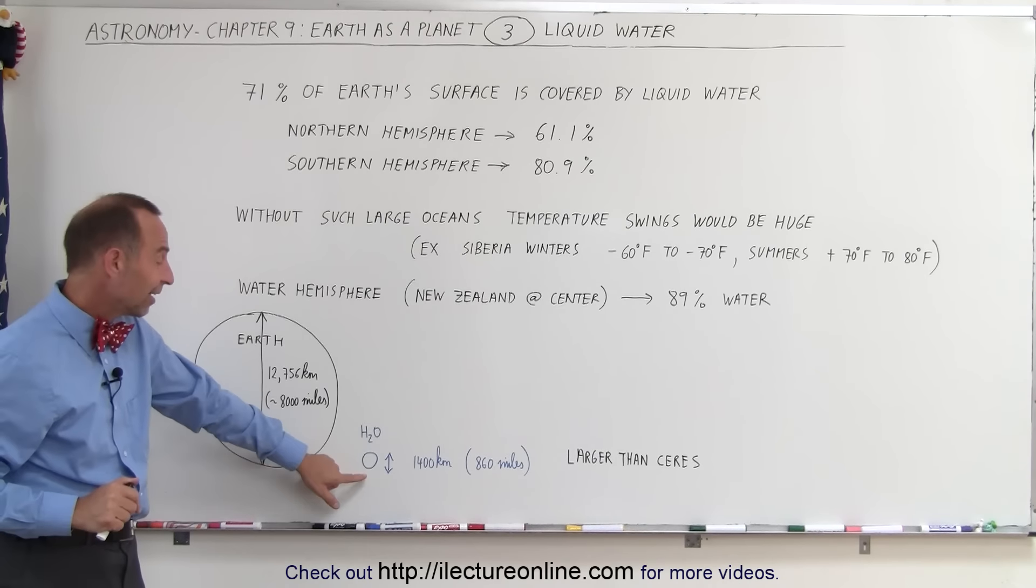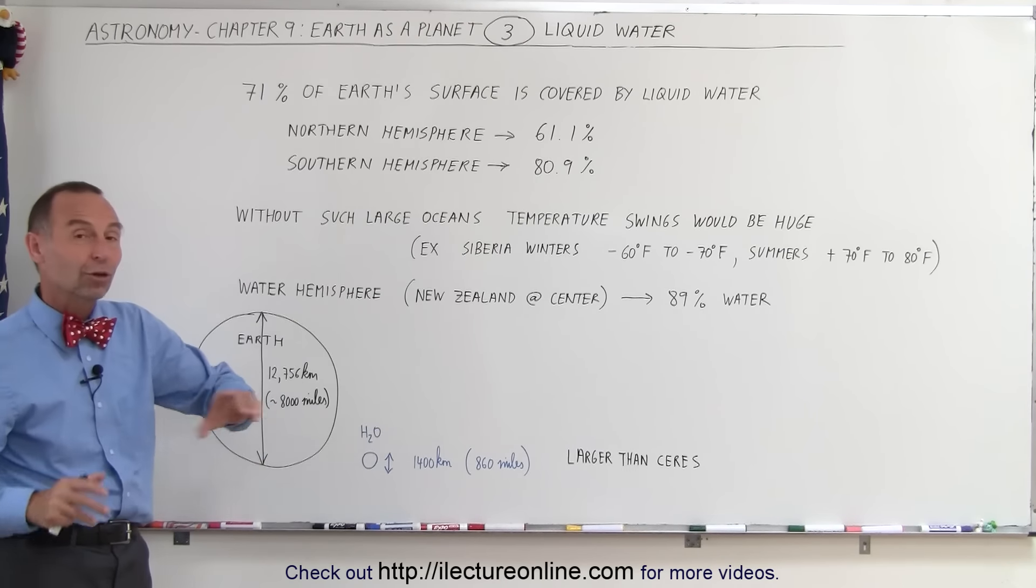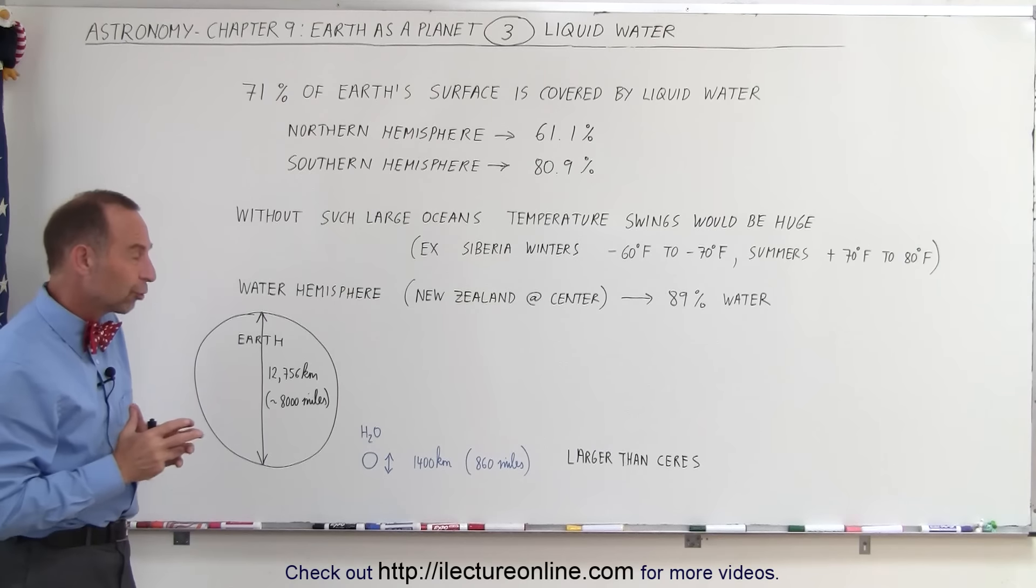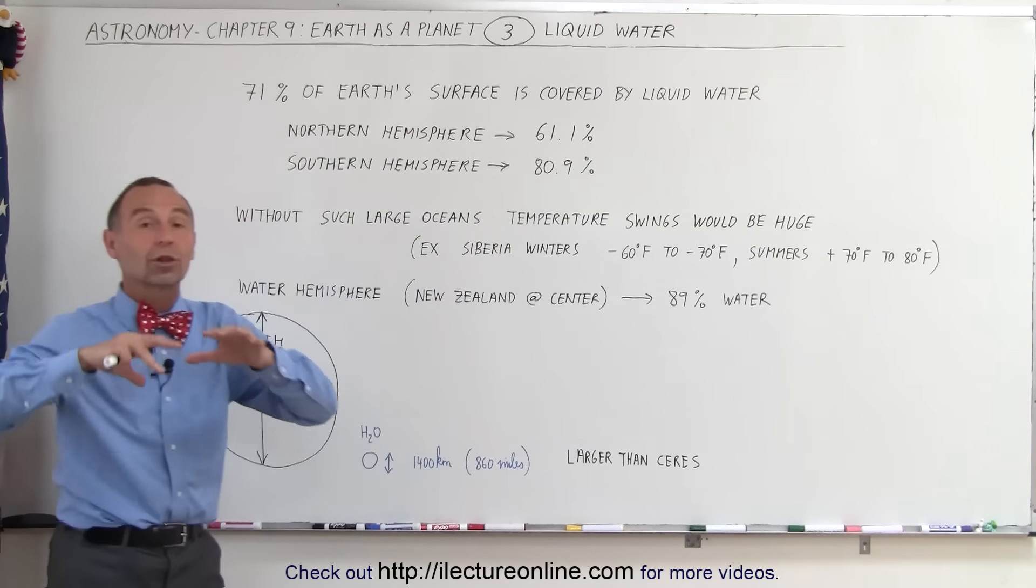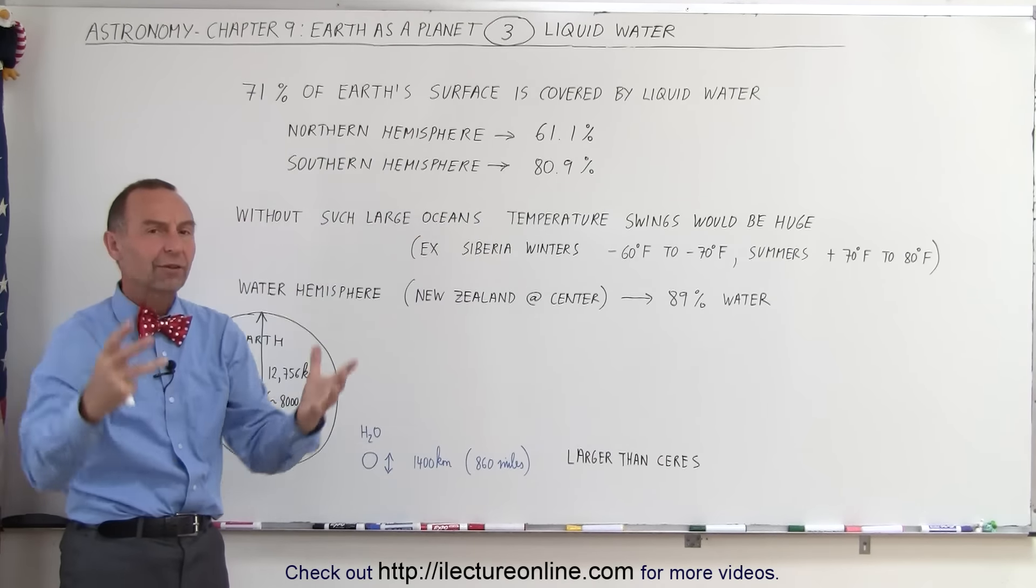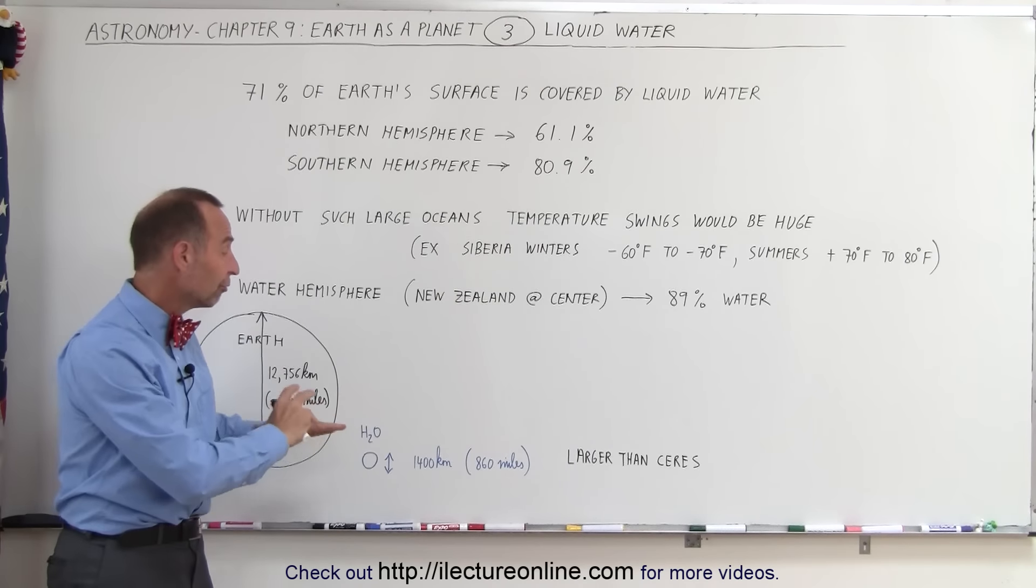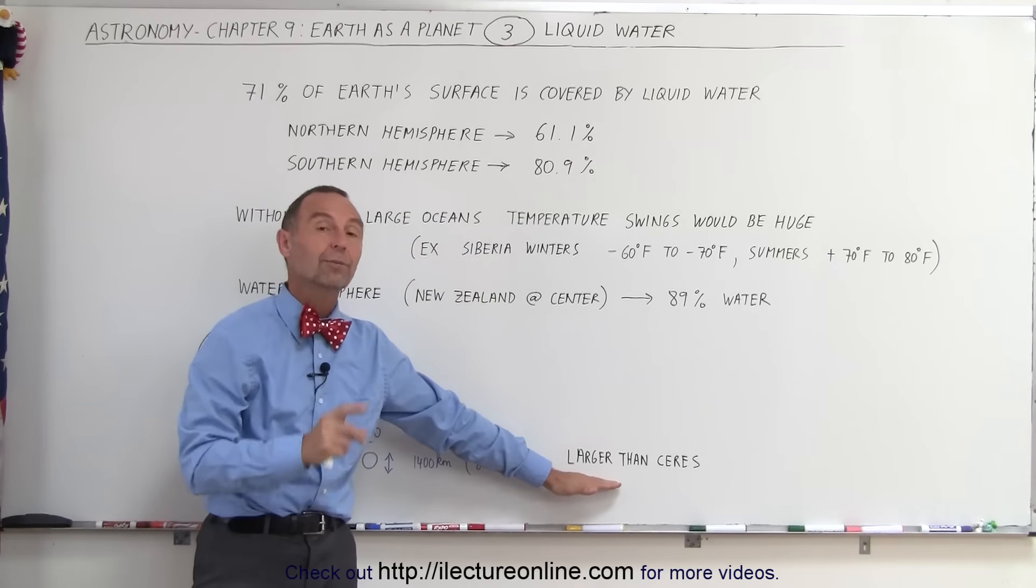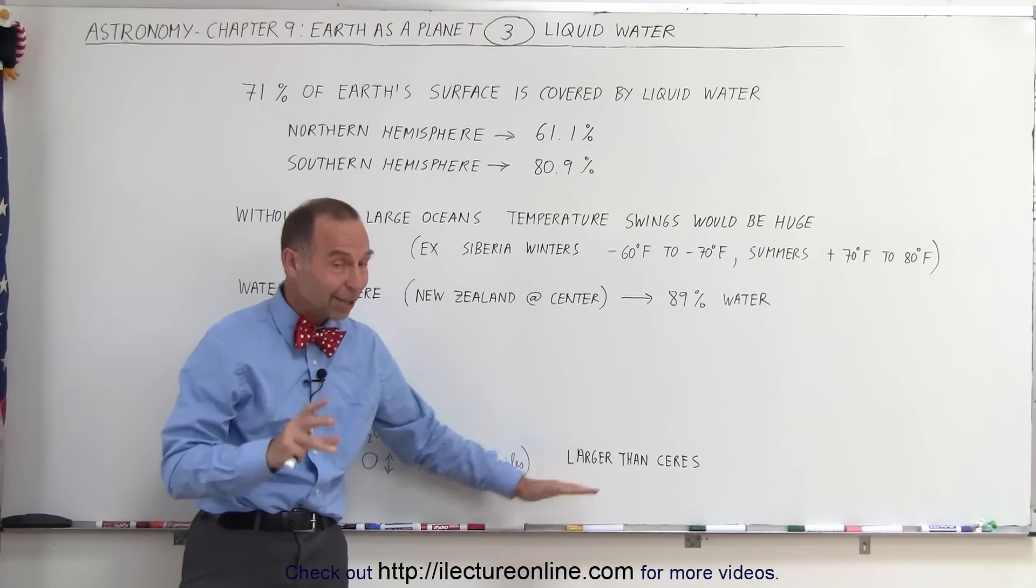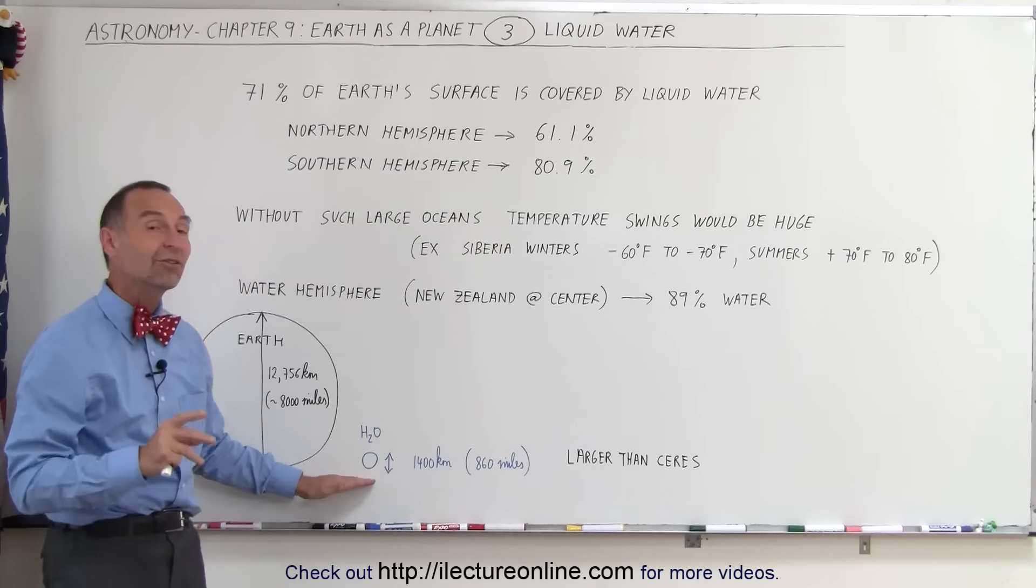Another interesting fact is that if you took this water and compared to the largest asteroid of our solar system, Ceres, which is the only asteroid large enough for gravitation to pull itself into a sphere, the amount of water we have on Earth has a larger volume than the total volume of Ceres. So it's not a little bit of water that we have. We actually have a tremendous amount of water.